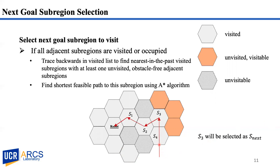The robot passed S4, S3, S2, S1, then reached the current position. At the robot's current position, all neighbors have been visited, so the robot will select S3 as the next goal, because S3 is the nearest past visited subregion with unvisited, obstacle-free neighbors.